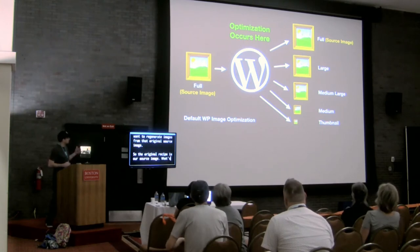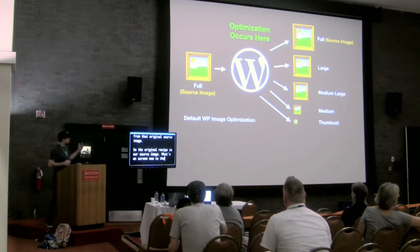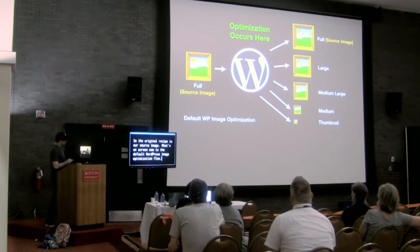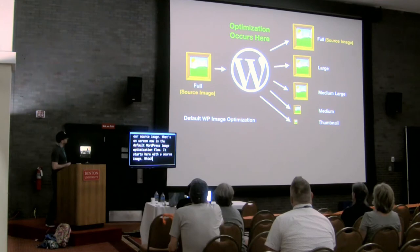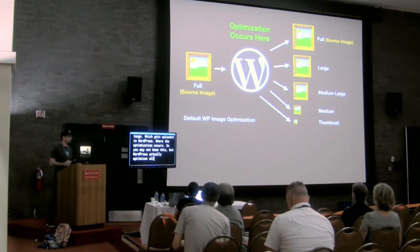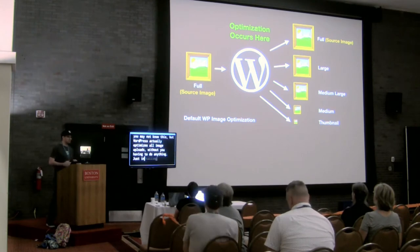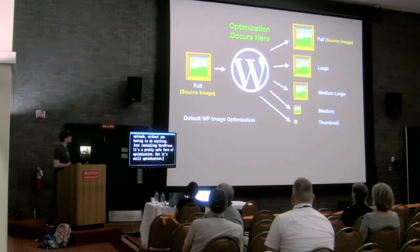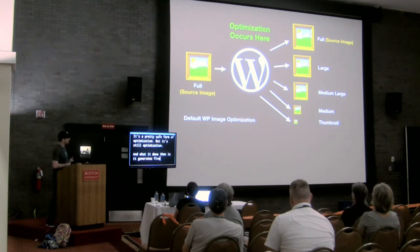What's on screen now is the default WordPress image optimization flow. It starts with a source image which gets uploaded to WordPress where the optimization occurs. You may not know this, but WordPress actually optimizes all image uploads without you having to do anything — just by installing WordPress. It's a pretty safe form of optimization, but it's still optimization. What it does is generate five image sizes, depending on whether you have themes or plugins activated.